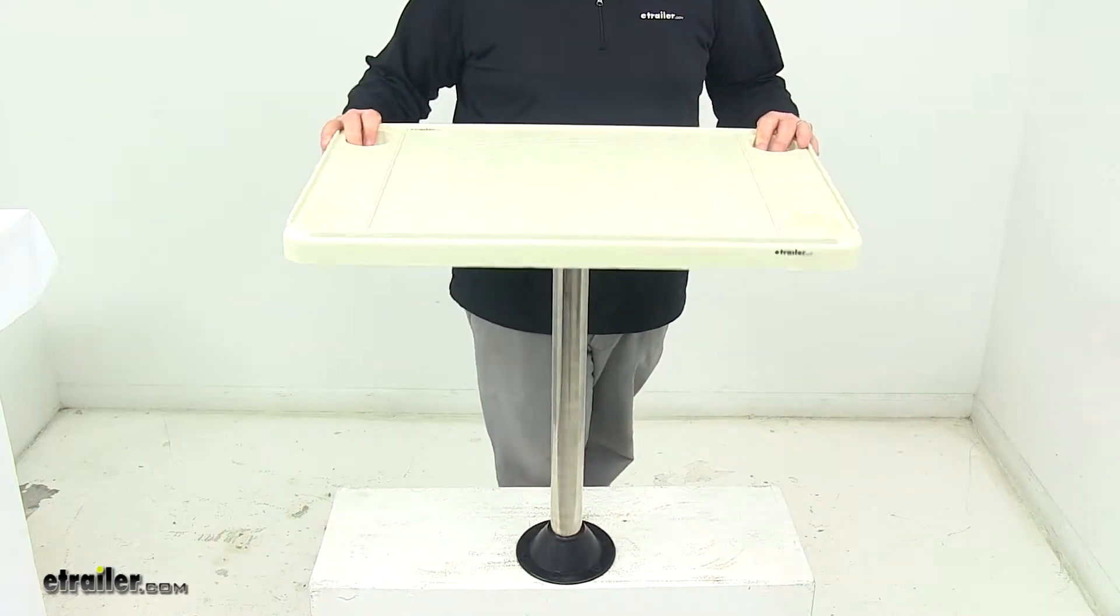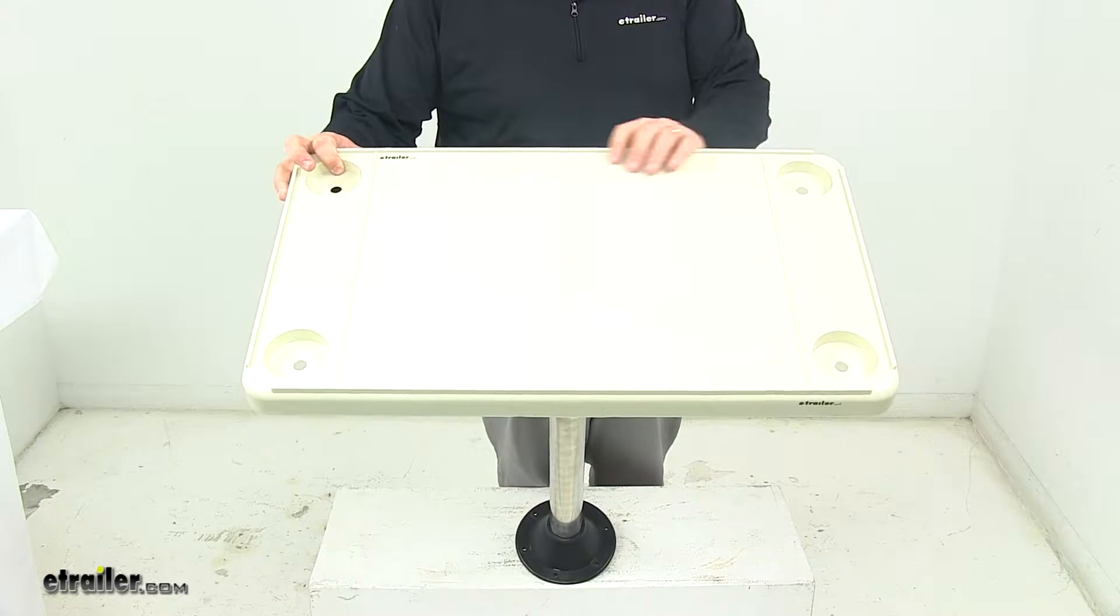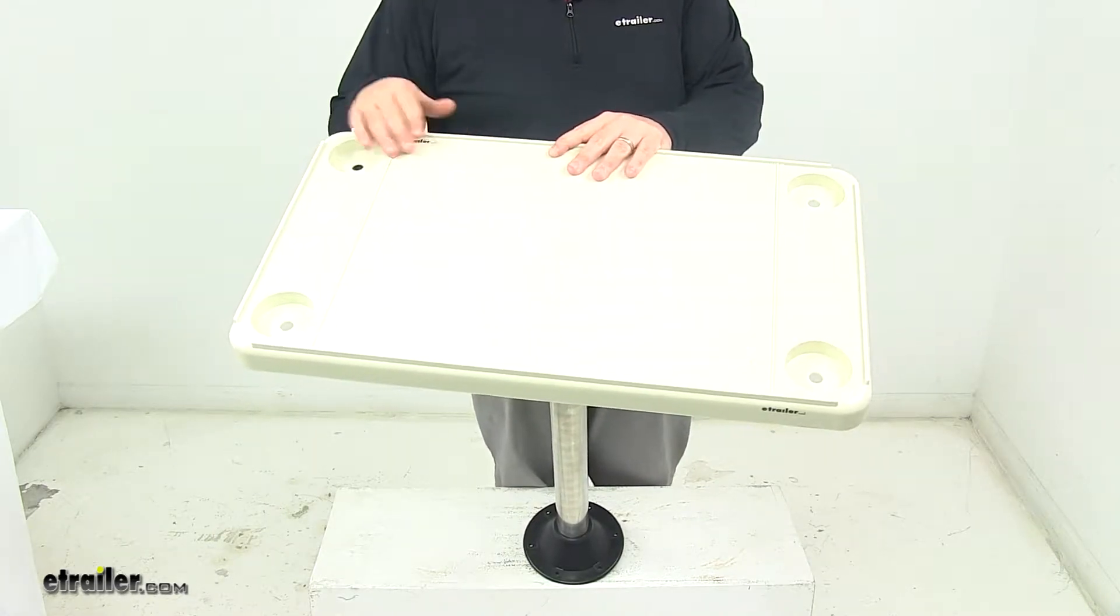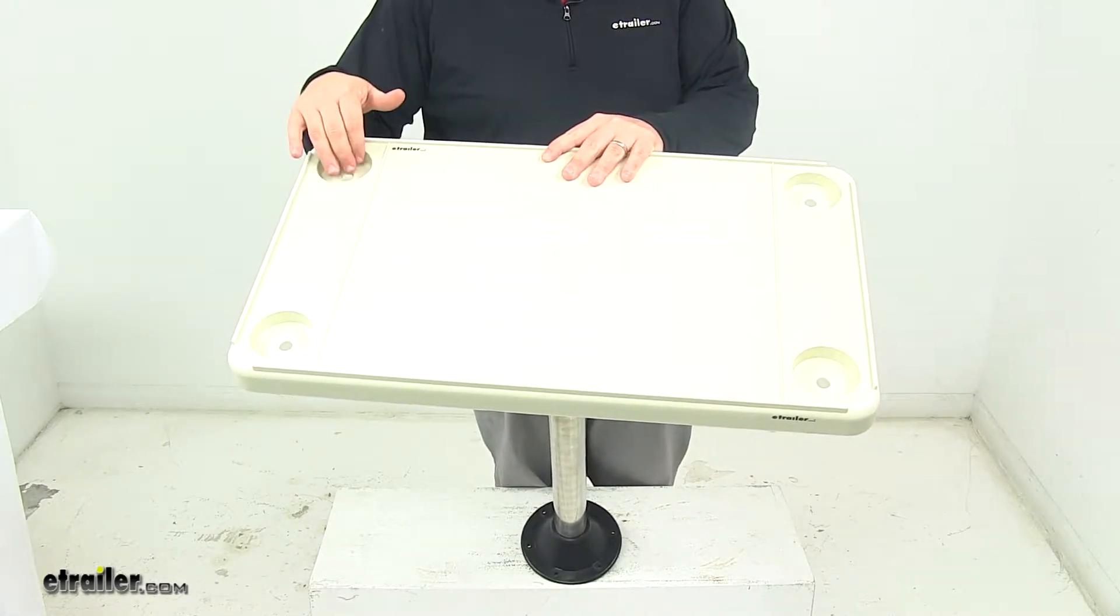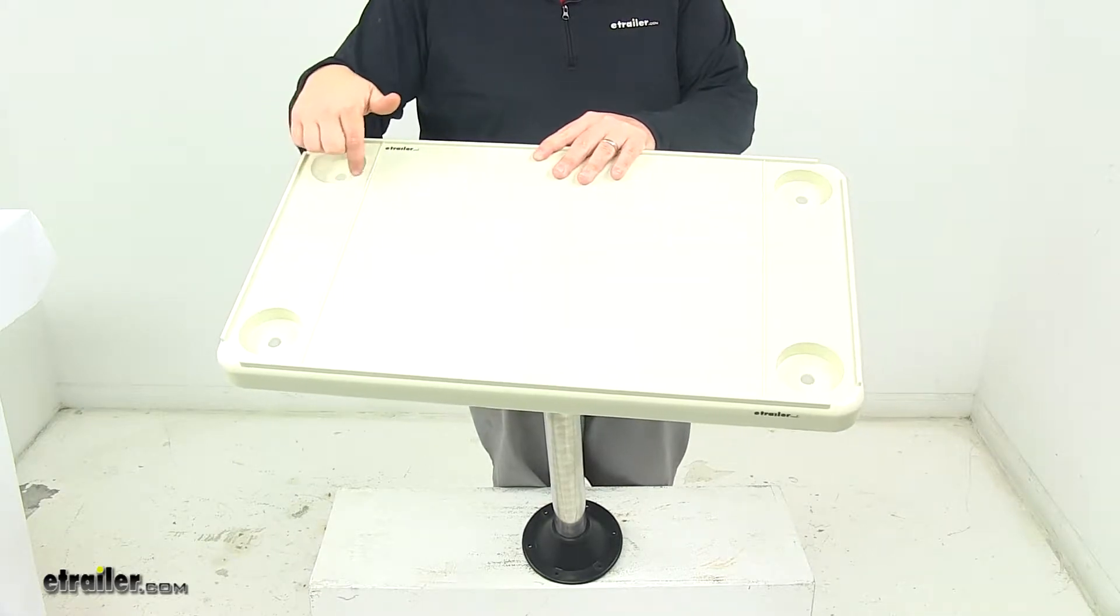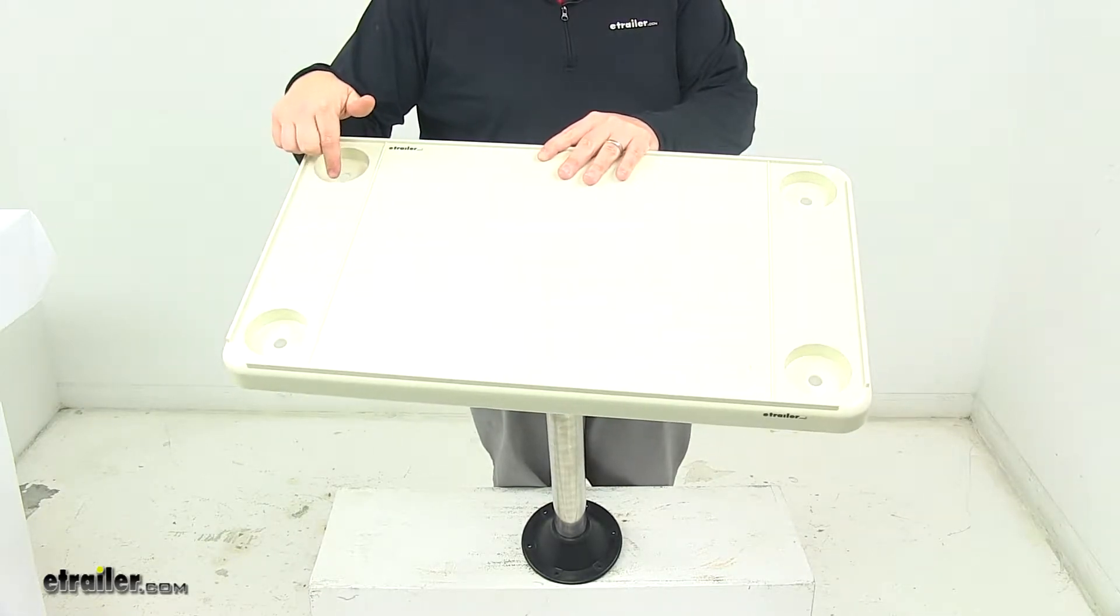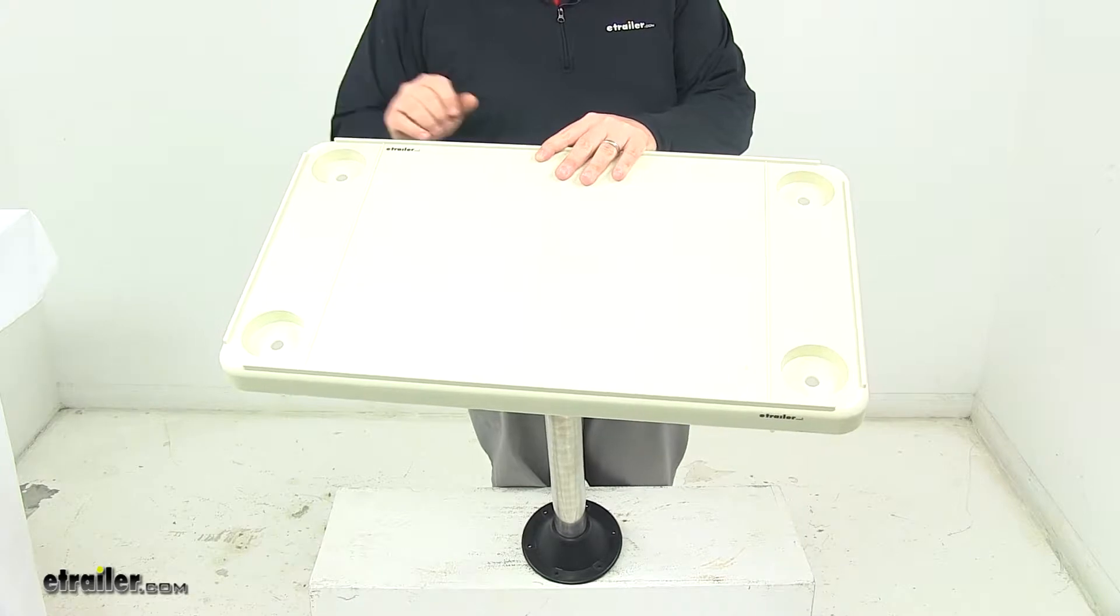And then on the top of the unit, we have four built-in cup holders, one on each corner. They have holes in the bottom, so that's going to allow water to drain out. These measure two and three-quarters of an inch in diameter and have a depth of three-quarters of an inch.